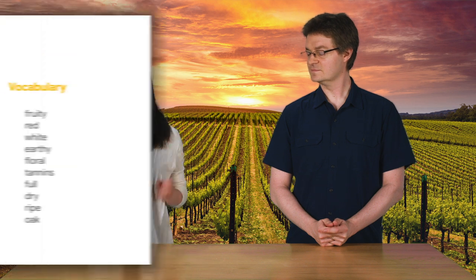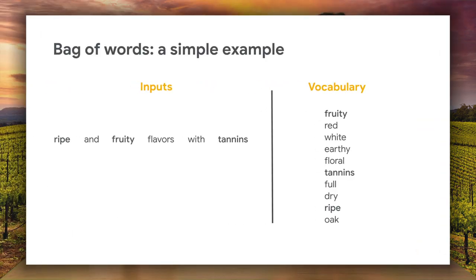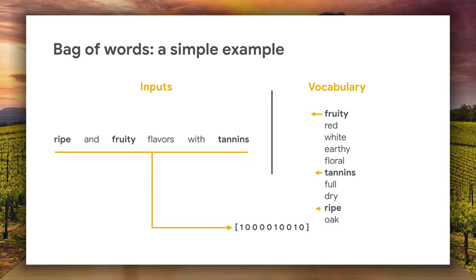Yes, and there are many ways to transform text. If we use multiple types of transformations at once, our model will be able to identify more complex relationships in our data. We'll use what's called a wide and deep model to predict each wine's price. For the wide part of our model, we'll represent our text as a bag of words, which will look like an array of ones and zeros indicating the presence or absence of certain words from our vocabulary. In this example, our vocabulary includes the top 12,000 words from our entire text corpus of wine descriptions.